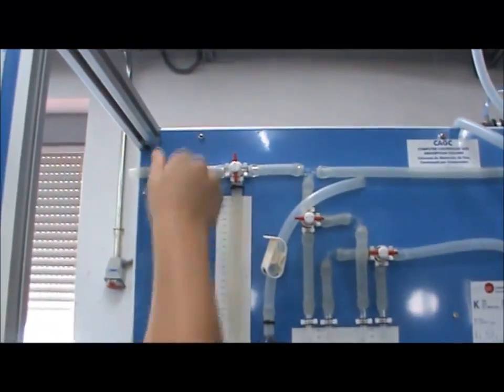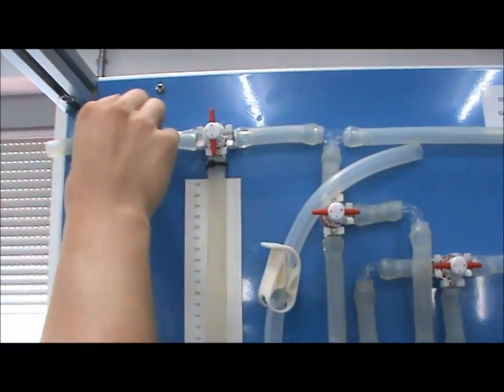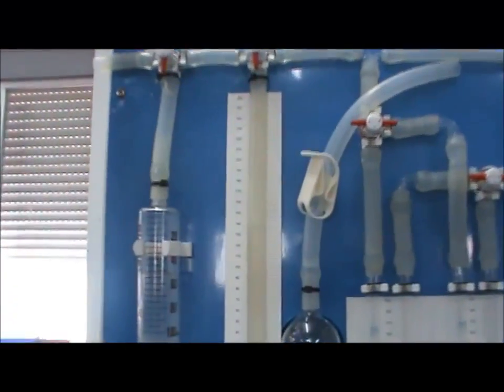Repeat by first closing VT3 and expelling the air to the atmosphere. Make sure the solution rises to a level somewhere within the measured range below valve VT2.